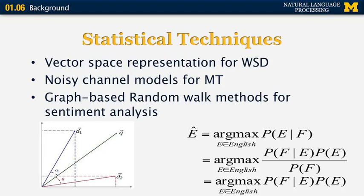Some techniques and statistics that are used in natural language processing are briefly mentioned here. One is the so-called vector space representation for word sense disambiguation, which we're going to talk about in a couple of weeks. The noisy channel model for machine translation. I'm going to illustrate those two here at the bottom of the slide.